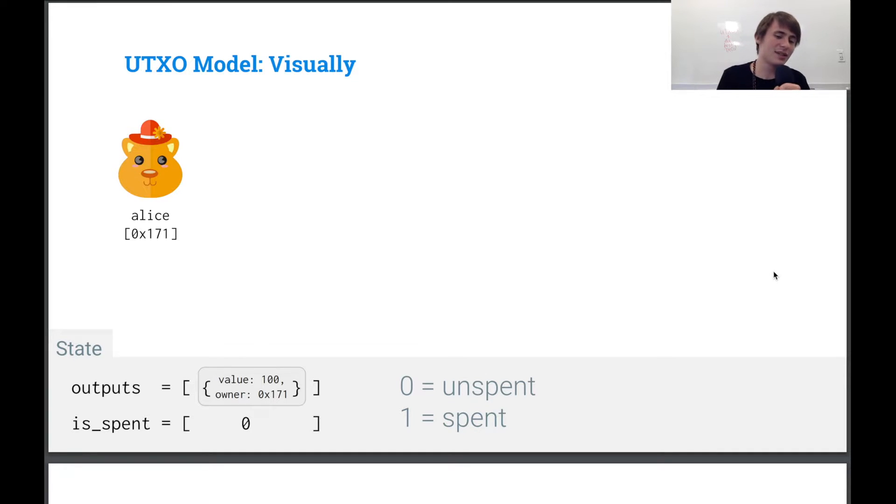So we just look at the index, and we see, okay, do these indices match up? And we can check if it's spent or unspent. So in this case, it is unspent. But now that we flipped it to one, we can say that this UTXO is spent.